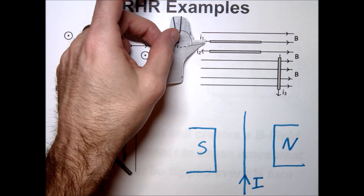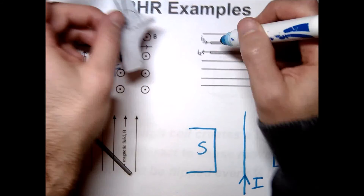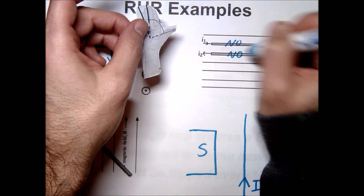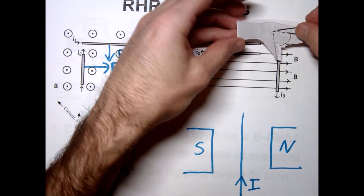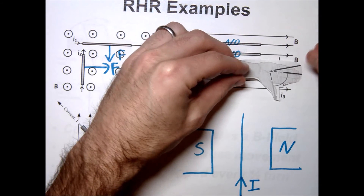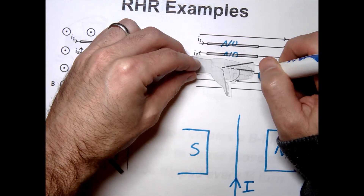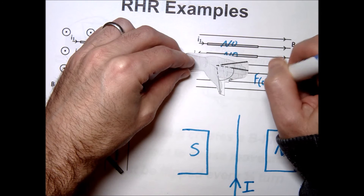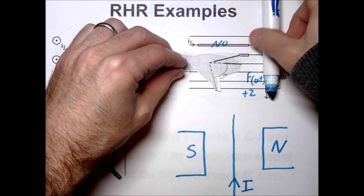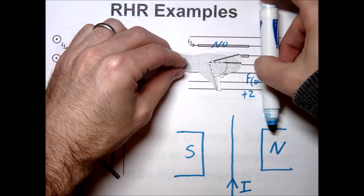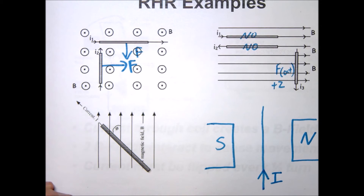When I1 and B are parallel — or I2 and B are parallel — there's going to be no force on the wire. For the last case in this set: current going one way, B field going another, following the right-hand rule gives a force coming out of the page — the positive z direction. In other words, if the current is moving that way, the wire itself would be thrust upward toward you.